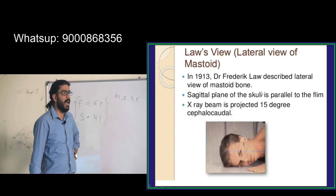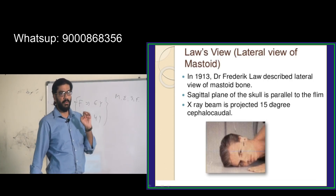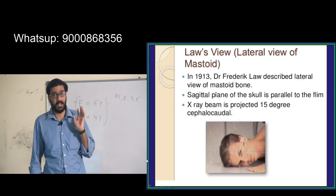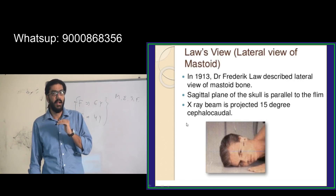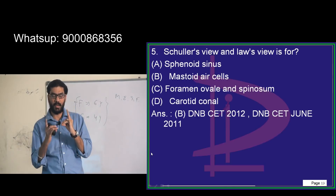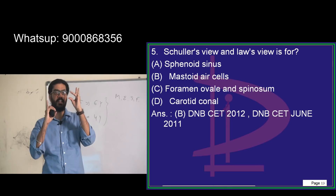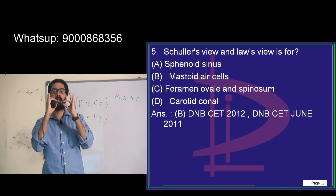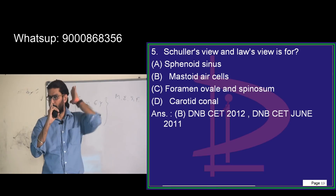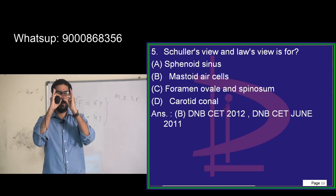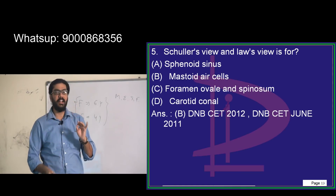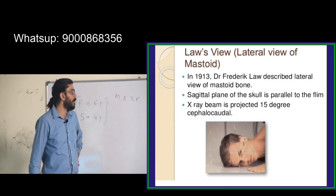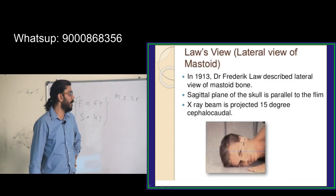Schüller's view, lateral oblique view, and Towne's view are all X-rays intended for the mastoid process. Sometimes we still rely on Schüller's view, which is a very good view. For Towne's view — taken anteroposterior — the projection is towards the petrous bone. You can see the petrous apex properly. Towne's view is intended for acoustic neuroma — just remember that.